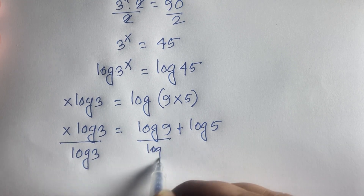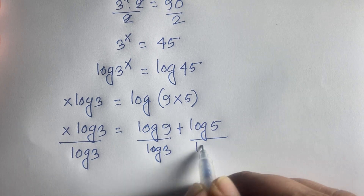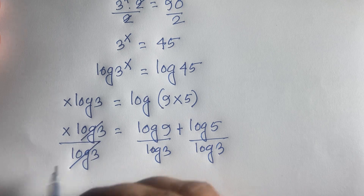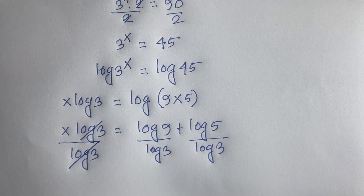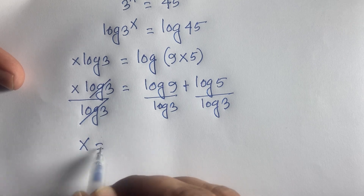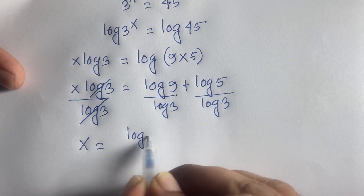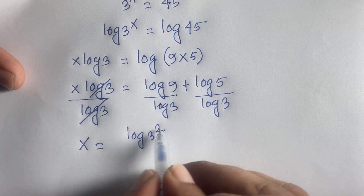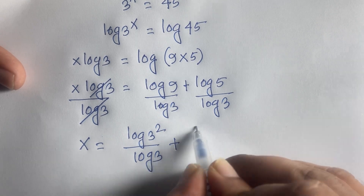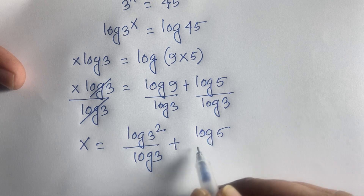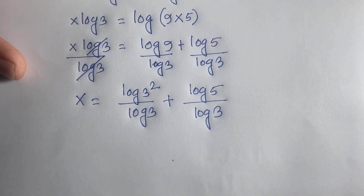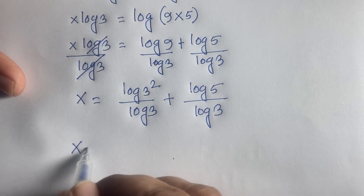At this moment if I divide both sides by log 3, here is log 3 and here is log 3 — this log 3 cancels with this log 3. We find x is equal to log 9 over log 3 plus log 5 over log 3. Since 9 is 3 squared, log 9 over log 3 simplifies.